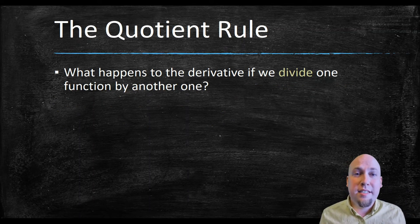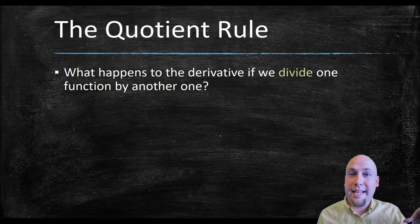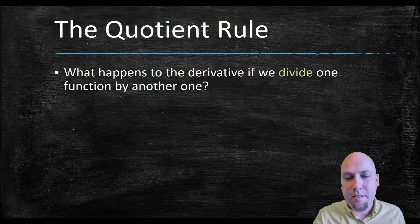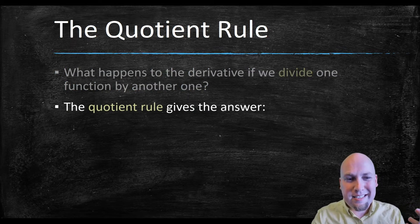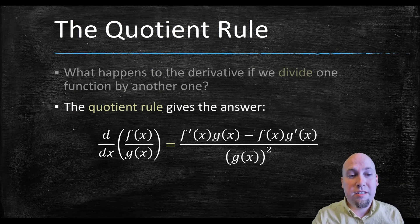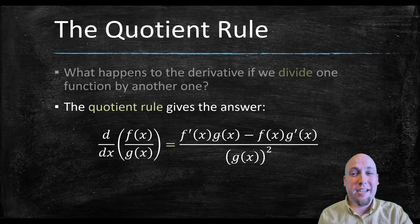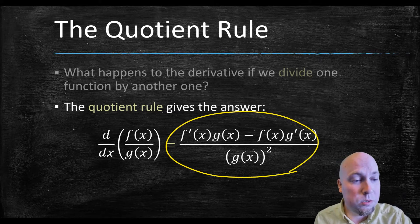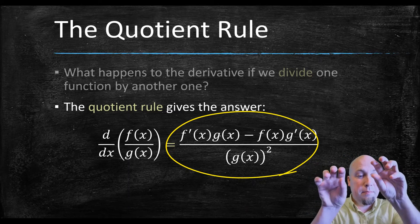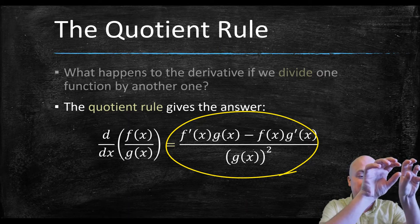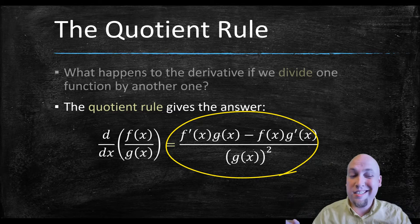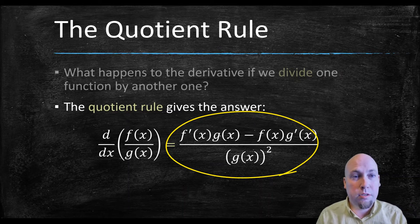So let's just dive right into the quotient rule, and we'll explain in a minute — after we've done an example — why it doesn't actually matter, why you don't need it. The quotient rule tells us how to find the derivative of a function divided by a function. It's the derivative of the top times the bottom, minus the top times the derivative of the bottom, all divided by the bottom squared. It's a big ugly mess — a lot harder to remember than the product rule or the chain rule.